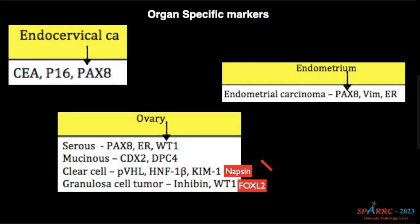For endocervix, PAX-8. PAX-8 is positive for Müllerian epithelial origin, so endometrium will be positive. Serous tumors of the ovary will be positive in addition to WT-1. For clear cell carcinoma, again remember the VHL gene — it will be positive. And Napsin will be, for unknown reasons, positive there. Granulosa cell tumor is like it will be positive for many markers, but FOXL2 is a very specific marker for granulosa-theca cell tumor.